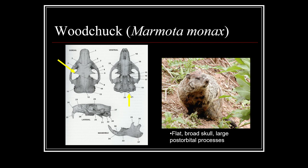Next we have the woodchuck, Marmota monax — obviously one of the larger members of this family in the region. This is one of the skulls you'll need to know, so go back and look at the skulls video. They have really strong post-orbital processes that really give away the skull compared to other rodents. It's a pretty large squirrel species with mottled-colored fur — most of you know what a woodchuck looks like.